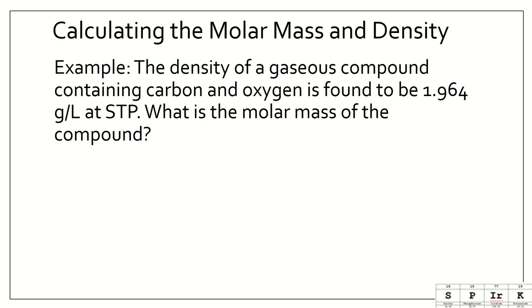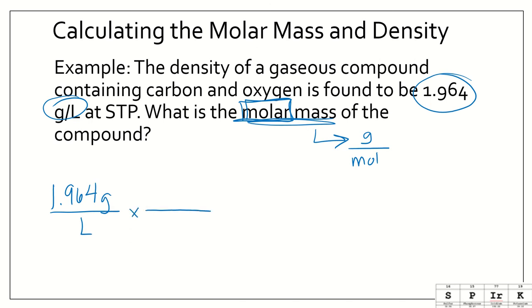The density of a gaseous compound containing carbon and oxygen is found to be 1.964 grams per liter at STP. What is the molar mass of this compound? We need to take this density and convert it to a molar mass. One thing we want to keep in mind here is what is the unit for molar mass? The unit for molar mass is grams per mole. We need to take this 1.964 grams per liter and convert it to grams per mole. Let's start with 1.964 grams per liter.